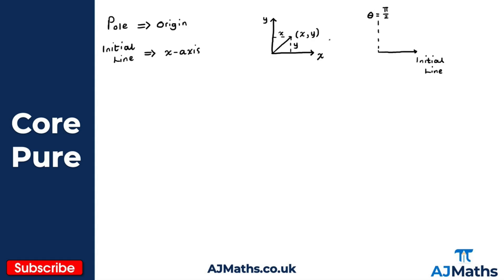So how would we describe this point in polar coordinates? Well, in polar coordinates this point (x, y) would be (r, θ). Here r is the distance from the pole, and theta is the angle that's measured anti-clockwise from the initial line. We can easily convert between Cartesian coordinates and polar coordinates. Using this diagram, this line — the distance from the pole — must be r, and this angle measured anti-clockwise from the initial line would be theta.